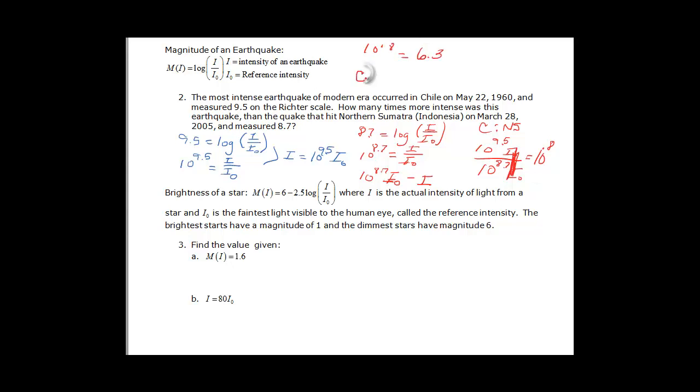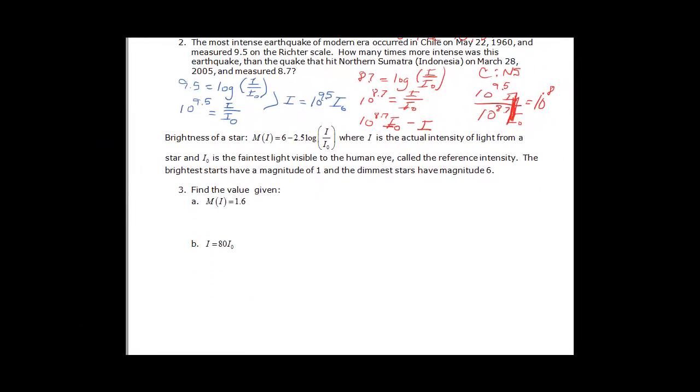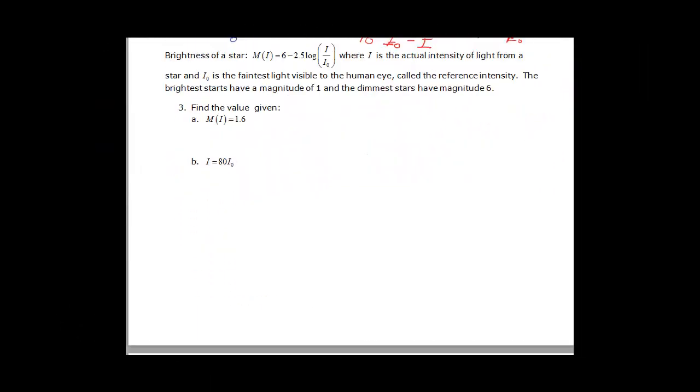So the Chile earthquake is 6.3 times more intense than the northern Sumatra. Alright, so let's see what happens when we talk about the brightness of a star. Here we are again. We've got this magnitude, but it's a little bit different function. But we do the same thing.